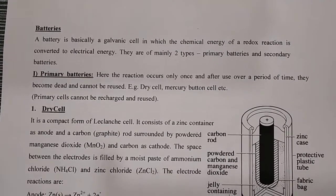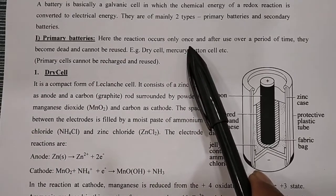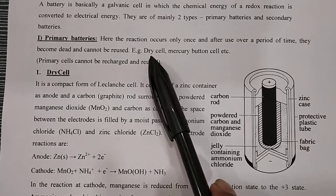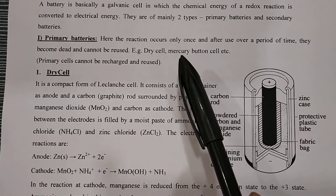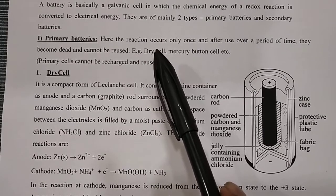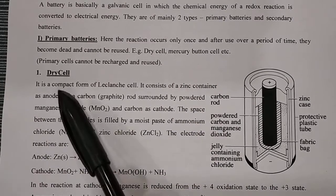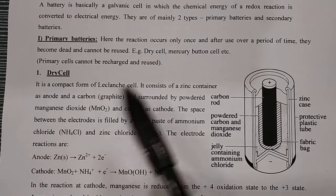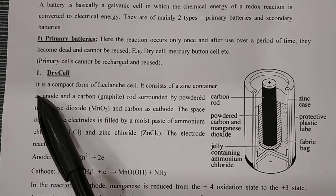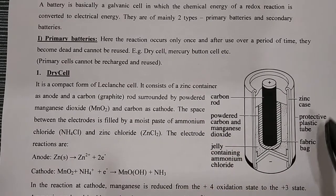In primary batteries, the reaction occurs only once, and after use, over a period of time they become dead — they cannot be reused. The best examples are dry cell and mercury button cell. In this session we will discuss two primary cells: the first is the dry cell. It is the compact form of the Leclanché cell, and it consists of a zinc container.